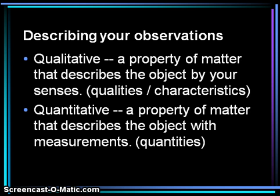Describing your observations. We have two different types of data that we collect in science. The first is qualitative data, which deals with qualities or characteristics of an object gathered by using our senses. Examples of qualitative data could be color, odor, and texture.